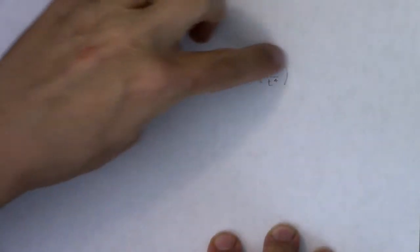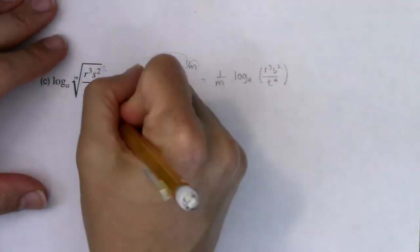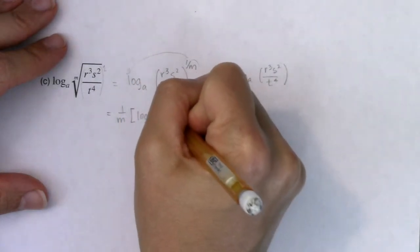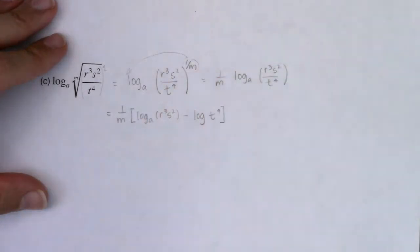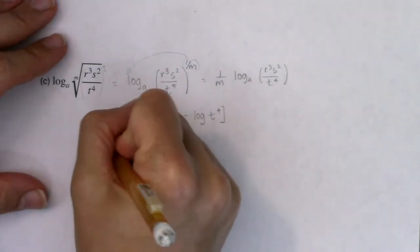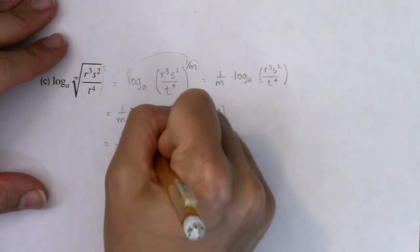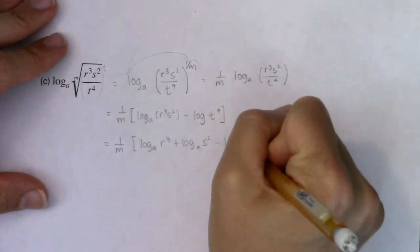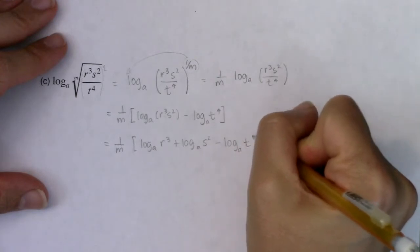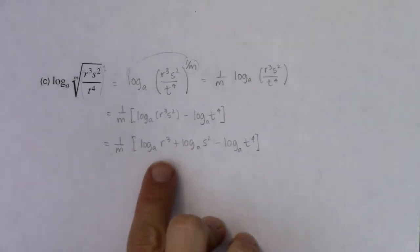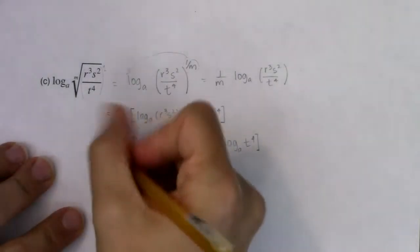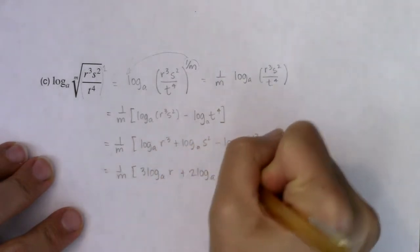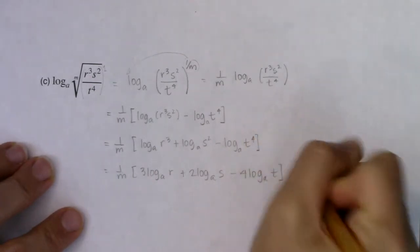I'll keep the one over m out here and start unpacking this. I've got a quotient, so let's use the quotient rule: take the log of the numerator and subtract out the log of the denominator. Then I see that my numerator has a product in it, so I apply the product property — expand it into a sum of logarithms. Then I can use the power property and bring each of the exponents down. So we will have one over m times: 3 log base a of r plus 2 log base a of s minus 4 log base a of t.